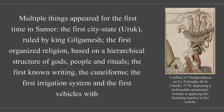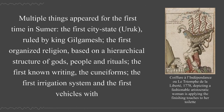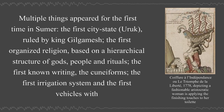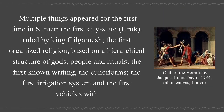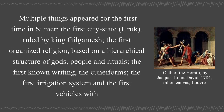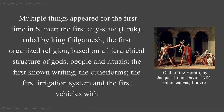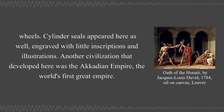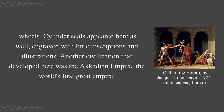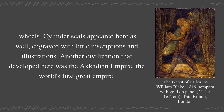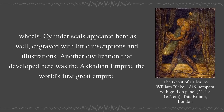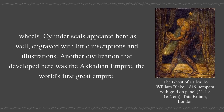Multiple things appeared for the first time in Sumer: the first city-state Uruk ruled by King Gilgamesh, the first organized religion based on a hierarchical structure of gods, people and rituals, the first known writing — the cuneiform — the first irrigation system, and the first vehicles with wheels. Cylinder seals appeared here as well, engraved with little inscriptions and illustrations.